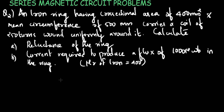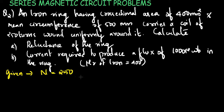Second question: An iron ring having cross-sectional area of 400 mm² and mean circumference of 500 mm carries a coil of 250 turns wound uniformly around it. Calculate: first, the reluctance of the ring; second, the current required to produce a flux of 1000 microwebers in the ring; third, the relative permeability μr, which is 400.